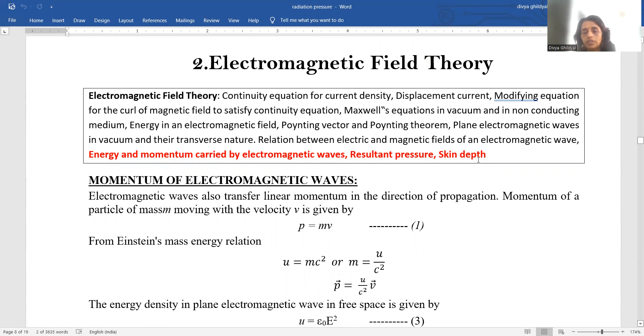Because of this energy and momentum, they create a pressure on the surface on which they fall and the depth of penetration through which they enter a surface for conductor and insulator is known as skin depth.